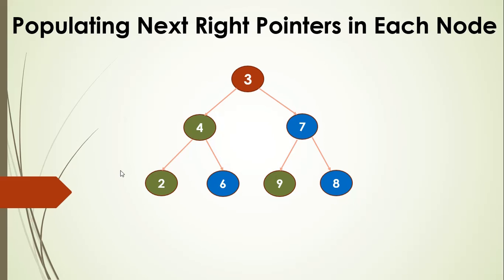For node three, the root, the next pointer will be null. For node four, we take its parent which is three, then take the right child from the parent — so next of node four will be node seven. For node two, it's a left child, so we go to its parent four and take its right child six. For right node six, because we use pre-order traversal, we already populated the next pointer for its parent four, which is seven. So we go to that next node seven and take its left child, which is nine.